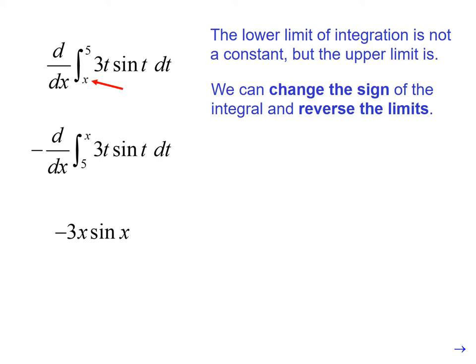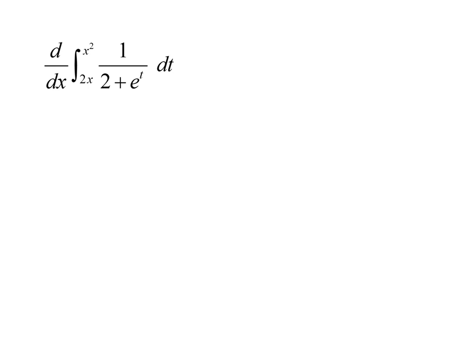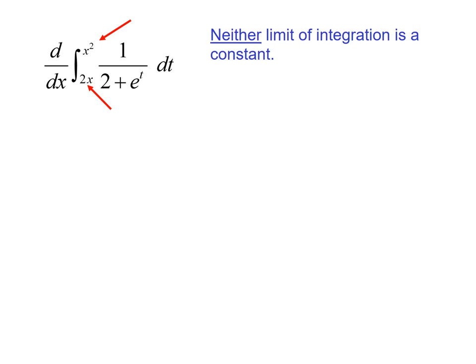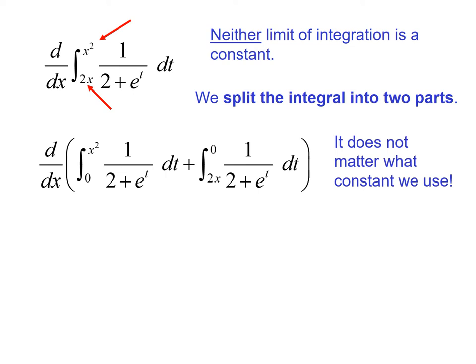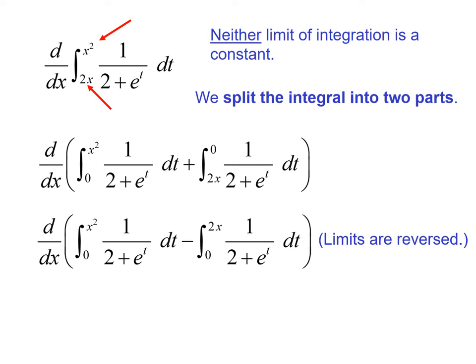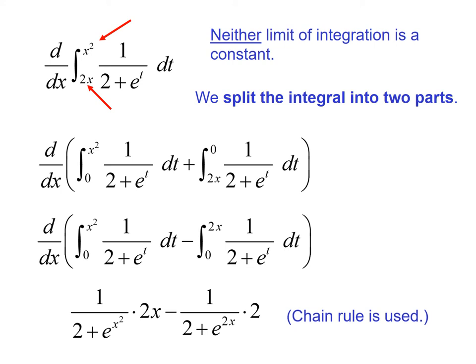In this case, we have the derivative of an integral, but neither limit of integration is a constant. So we can split this integral into two parts by inserting a constant. We can use whatever constant we want — it makes sense to use 0, but any number would work. We take the derivative of the integral from 0 to x squared, and the integral from 2x to 0, using the rule that the integral from a to b plus b to c equals the integral from a to c. We switch the limits on the second integral to put the constant on the bottom, then apply chain rule to both: for the left integral, plug in x squared and multiply by the derivative 2x; for the right integral, plug in 2x and multiply by the derivative 2.